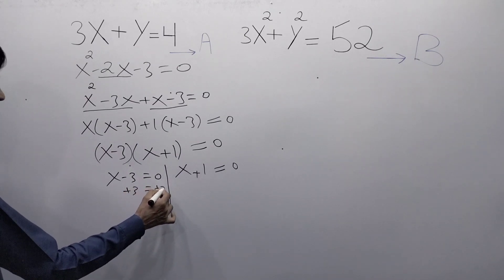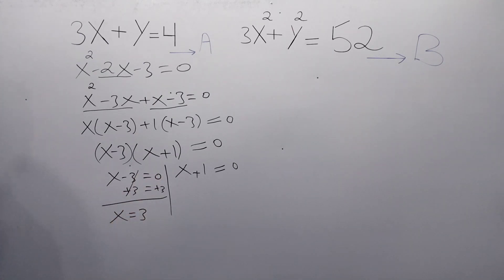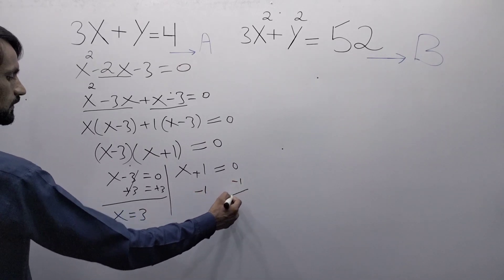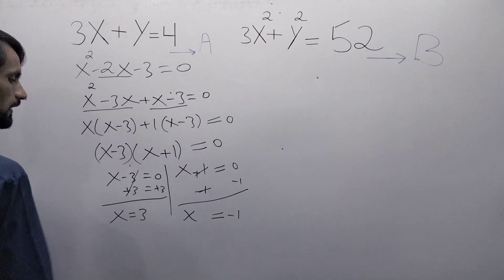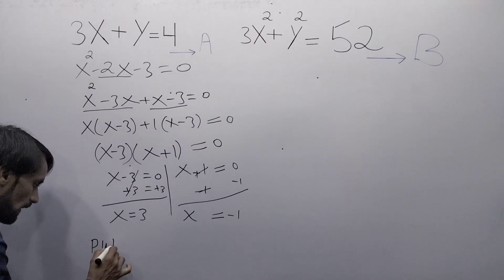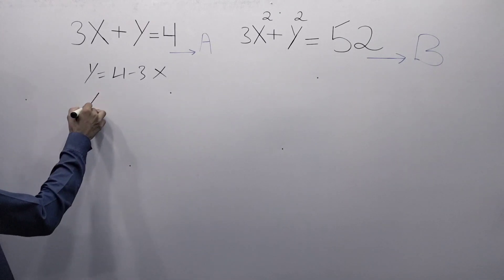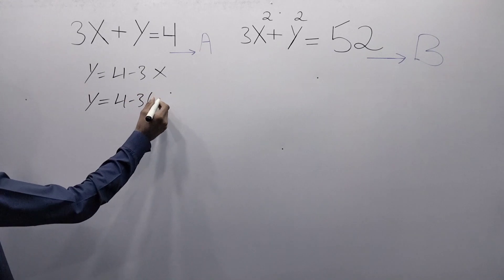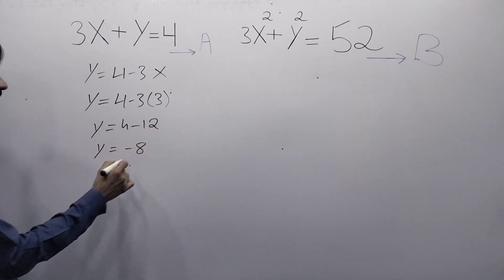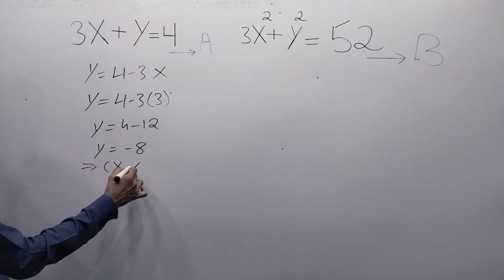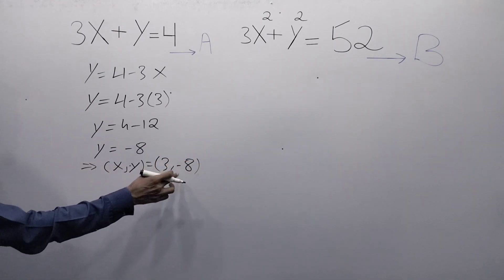Adding 3 on both sides of x minus 3 equals 0, we get x equals 3. Subtracting 1 from both sides of x plus 1 equals 0, we get x equals minus 1. Now putting x equals 3 into equation A: y equals 4 minus 3 times 3, so y equals 4 minus 12, which gives y equals minus 8. So one solution point is x equals 3 and y equals minus 8.